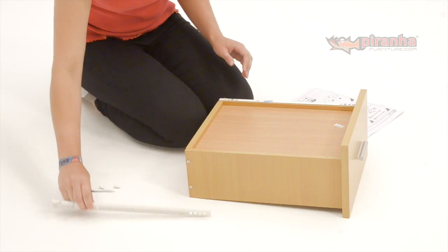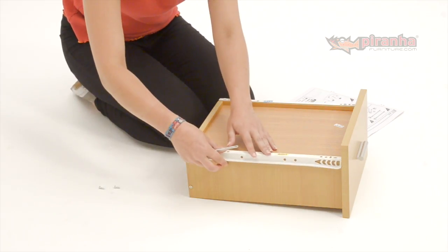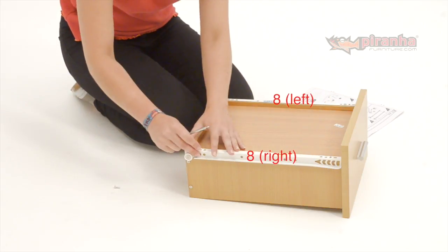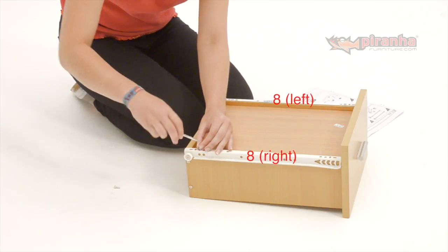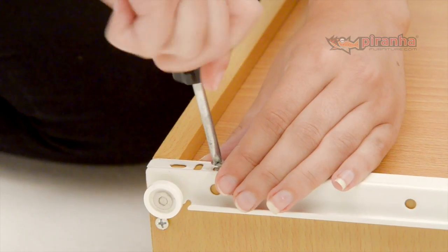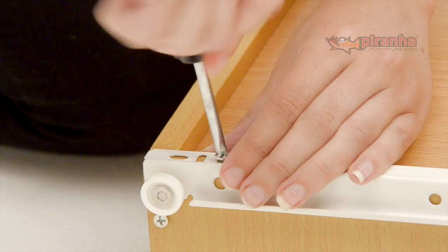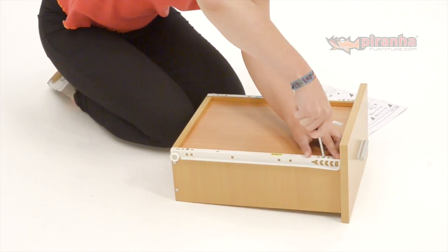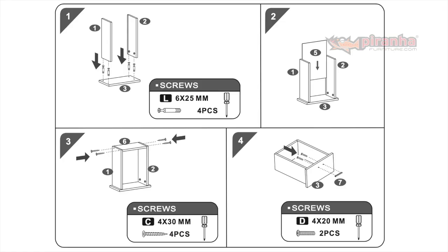Step 5. The drawer is nearly finished. We now just need to fit the runners. Sit the drawer upside down and place the runners on the sides as shown. Make sure they are the correct way round with the white wheel on the runner towards the rear of the drawer. Attach the runners using the 3x15mm screws. The correct holes to use here are marked in the assembly guide. Great! That's the first drawer finished. Now just repeat these steps to assemble the second drawer.